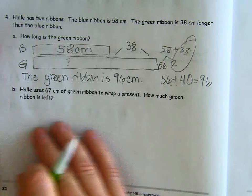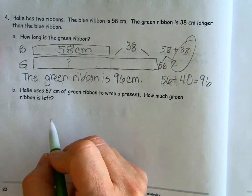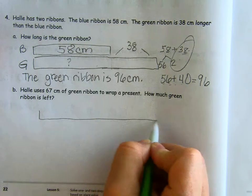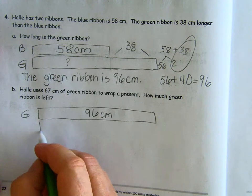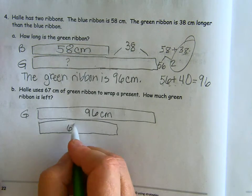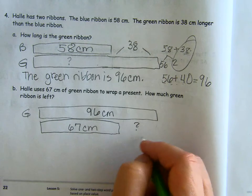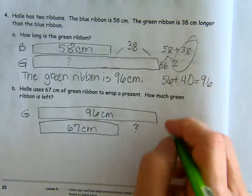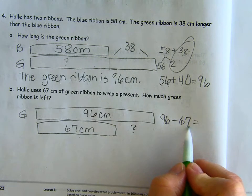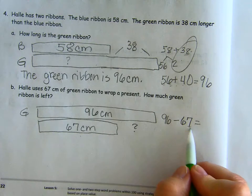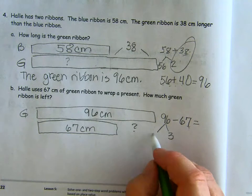So our second question is this: Hallie uses 67 centimeters of green ribbon to wrap a present. How much green ribbon is left? So now we have our green ribbon, which is 96 centimeters. She's going to use 67 centimeters, and we want to know what the other part is, what is left here. So we're subtracting 96 minus 67. We have 7 and we want to make that to the next 10. How many do we need to add to 7 to get to the next 10? We need 3.